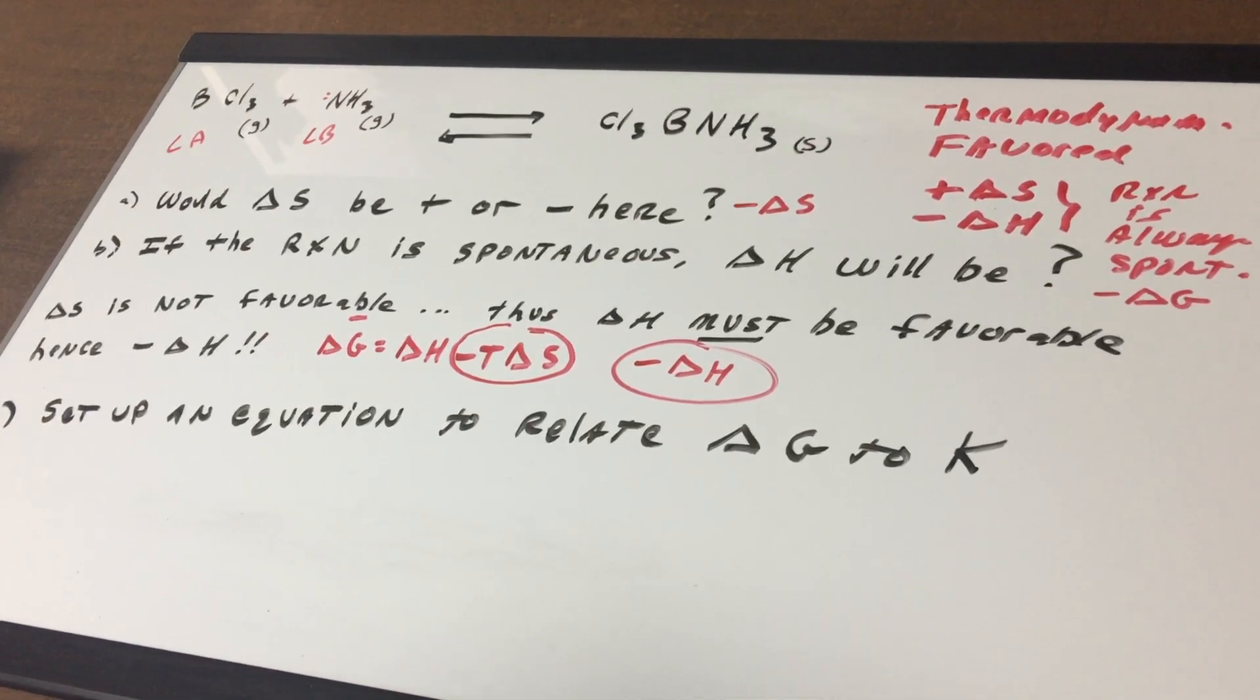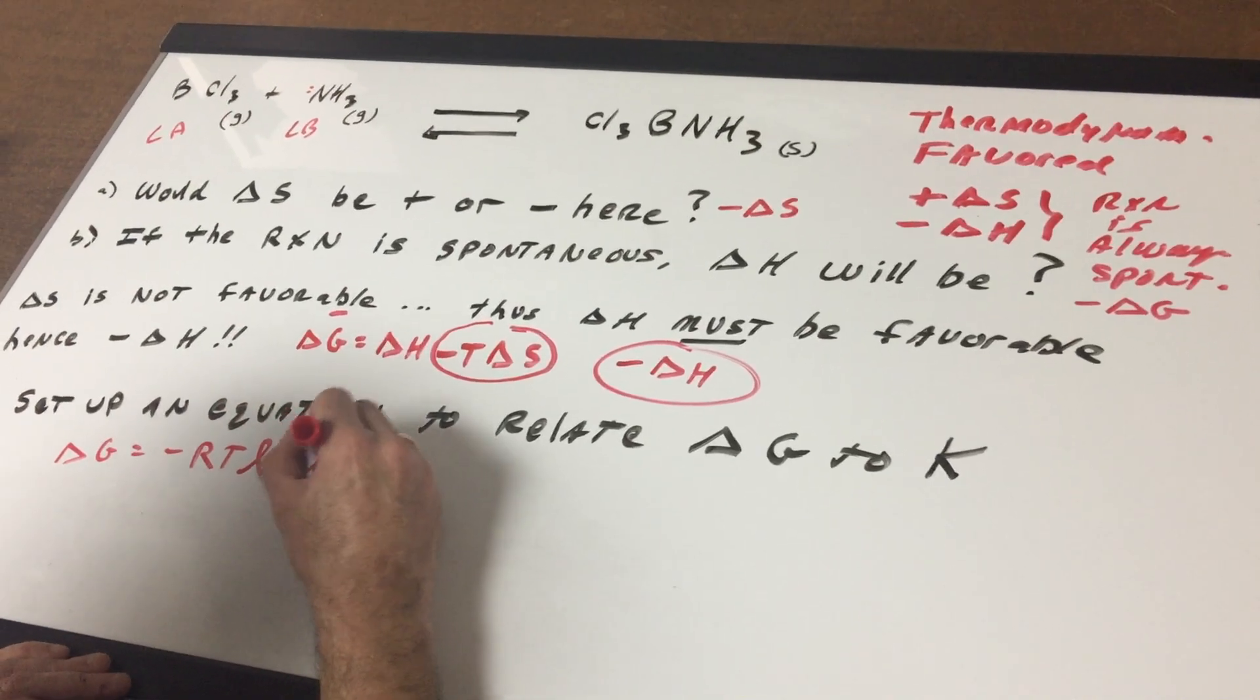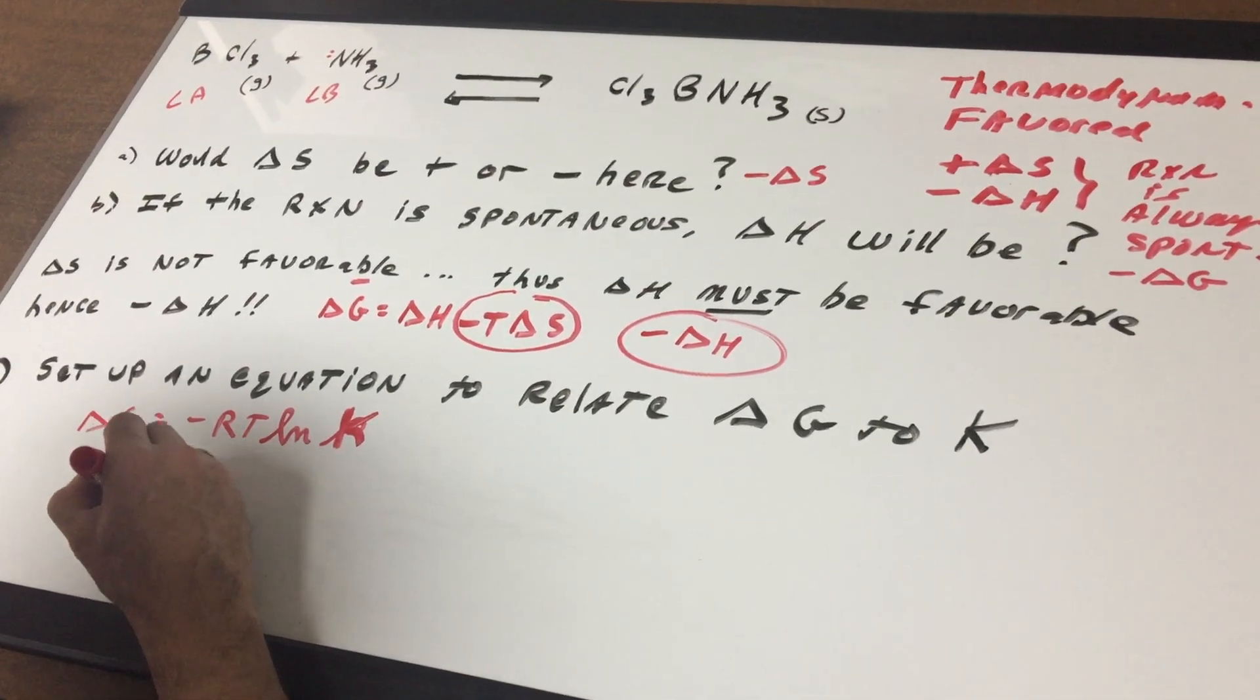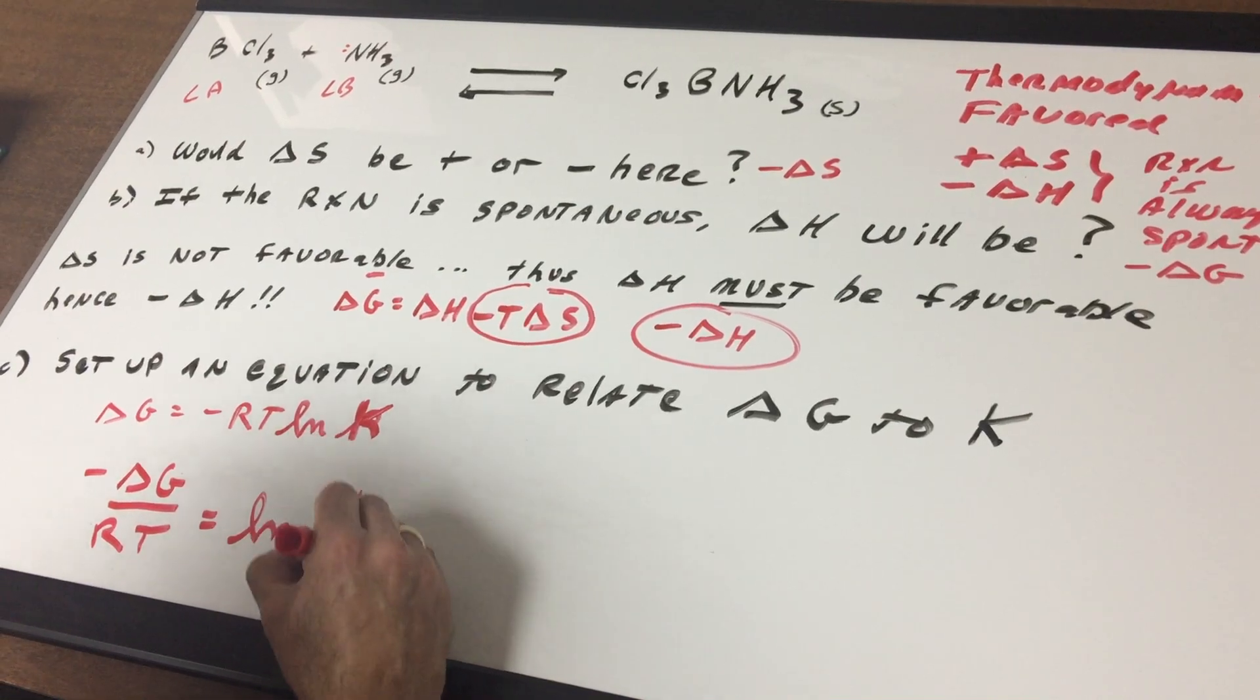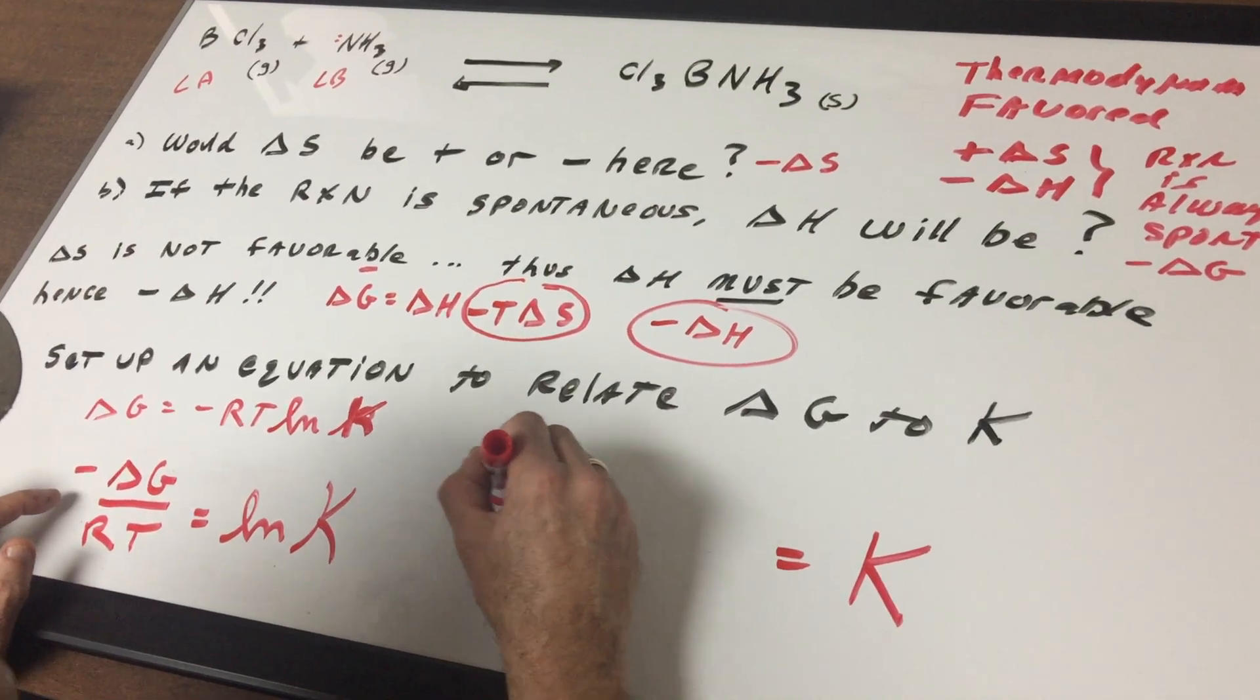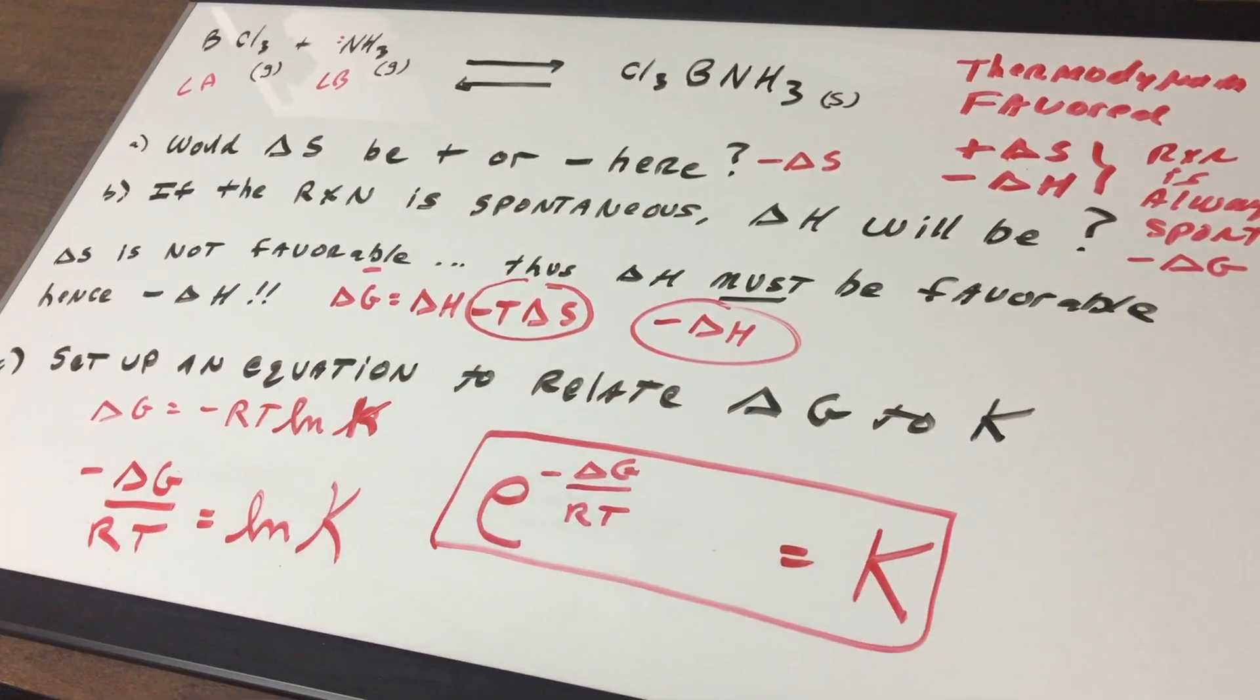What if I said to you to set up an equation to relate the delta G to the equilibrium constant? We know delta G is minus RT ln of the K. I'm not asking you to calculate anything, but we just got to set the equation up. I'm going to divide both sides by minus RT. So I get delta G over minus RT equals the ln of K. I'm going to take the anti-log of both sides so that an anti-log of ln would just give you the K by itself. And then this gets put to the E like this. You would write K equals E to the delta G over RT.